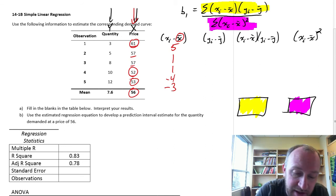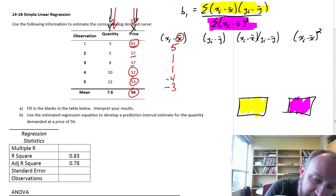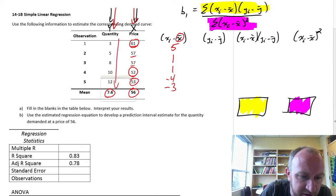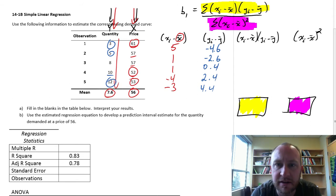We do the same thing now on our dependent variable y, or quantity. Our y bar is 7.6. First one is 3 minus 7.6, so minus 4.6. Next is 5 minus 7.6, so minus 2.6. Then we have 0.4, 10 minus 7.6 is 2.4, and finally 4.4 from 12 minus 7.6.